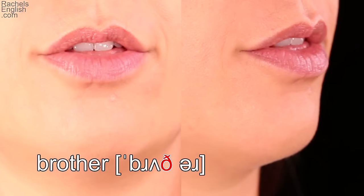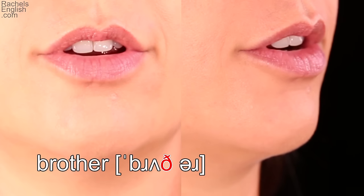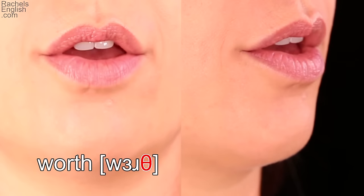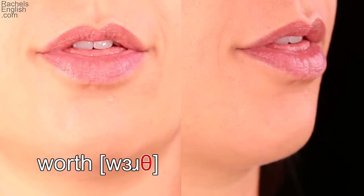Brother. Tongue tip through the teeth for the voiced TH. Lips and tongue are relaxed. Worth. Ending in the unvoiced TH. Again, the lips and tongue look very relaxed.